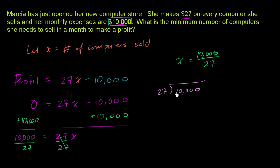So 27 goes into 10,000. 27 doesn't go into 1, doesn't go into 10, and it goes into 100 three times. 3 times 27 is 81. 100 minus 81 is 19. Then we can bring down a 0. 27 goes into 190. It looks like it'll go about 6 times. Let's see if that's right. 6 times 7 is 42. 6 times 2 is 12.